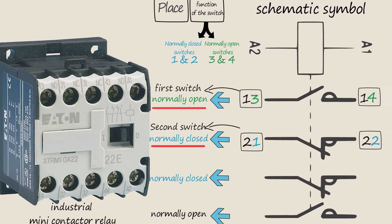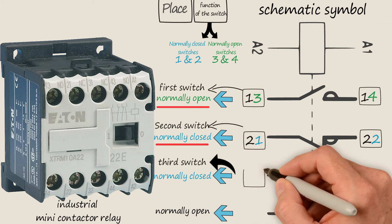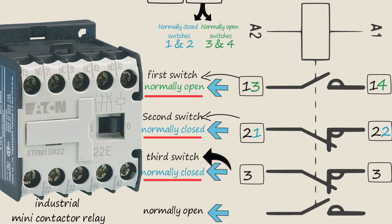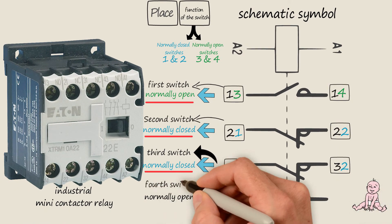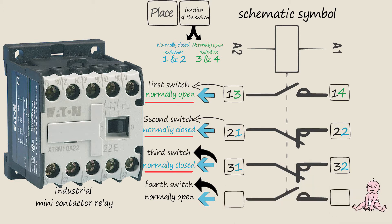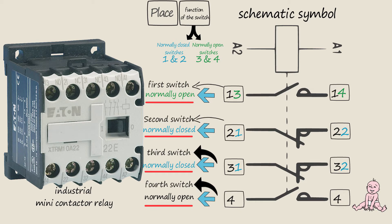This is the third switch connected with this relay. Each terminal of this specific switch is given three as the first digit. Because this switch is normally open, these terminals would be three-one and three-two. Finally, this is the fourth switch connected with this relay. Each terminal of this specific switch is given four as the first digit. Because this fourth switch is normally open, these terminals would be four-three and four-four.